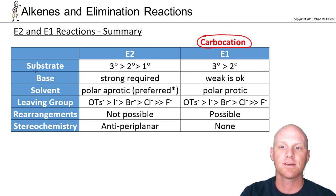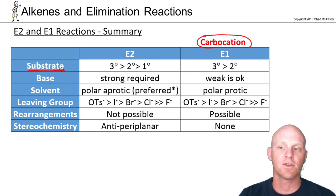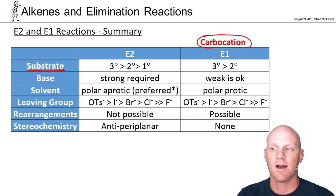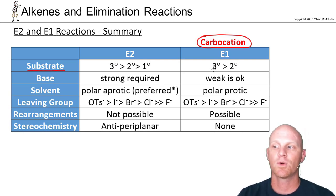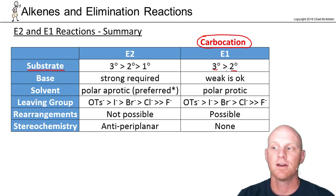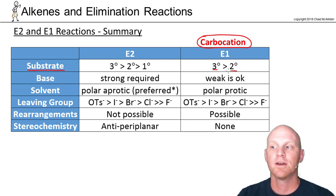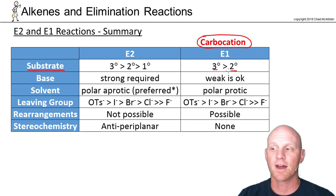The first thing we want to look at is the substrate, typically an alkyl halide. For E1, being all about the carbocation, the more stable the substrate carbocation, the better. Tertiary is the best, followed by secondary. Primary generally doesn't form a stable enough carbocation to react.